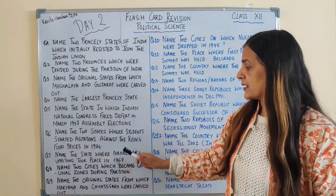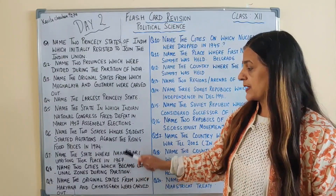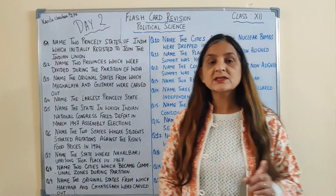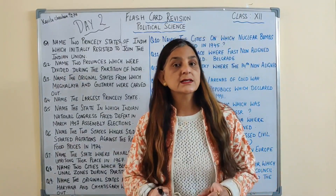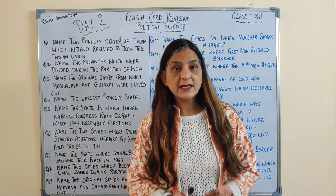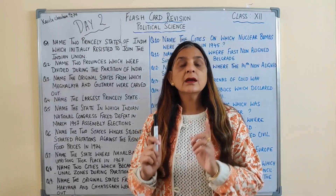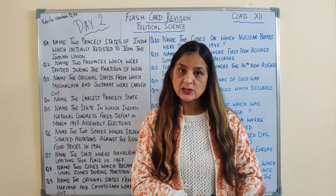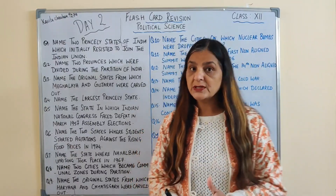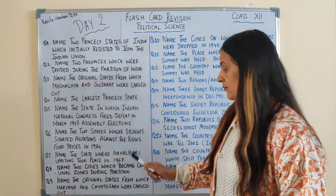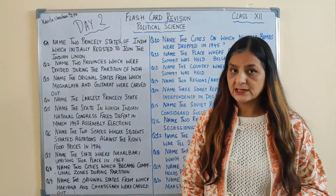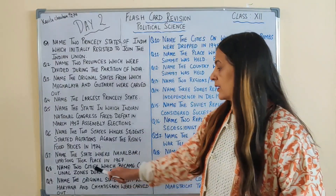Name the state where Naxalbari uprising took place in 1967. Naxalbari uprising hui thi Darjeeling mein, ek Darjeeling region ka jo police station tha wahan pe, or state ka naam hai West Bengal.